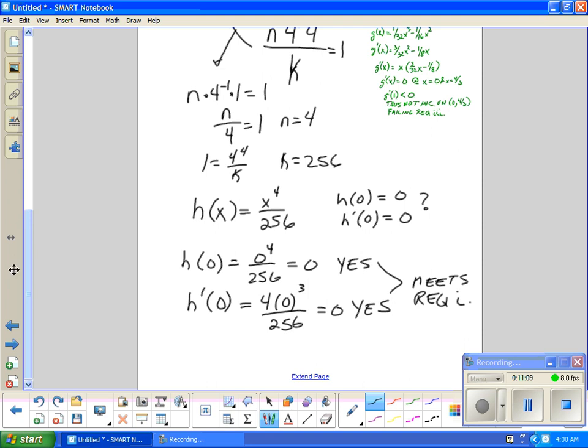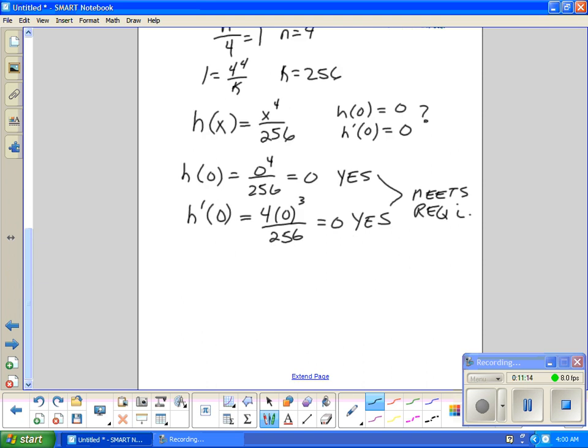The next thing we want to check to make sure it meets requirement three. Requirement three is that it's strictly increasing. We know h'(x) equals 4x³/256. I know that h'(x) is greater than zero because it's a cubic. It's all positive, zero to four. Thus, it meets three.